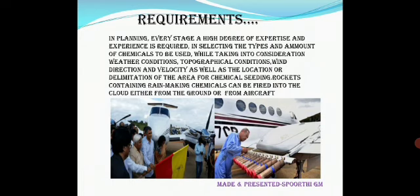In planning, every stage requires expertise and experience. In selecting the types and amounts of chemicals, the compounds used in cloud seeding take into consideration weather conditions, topographical conditions, wind direction and velocity, as well as the location or delimitation of the area for chemical seeding. Rockets containing rain-making chemicals can be burst into the cloud either from the ground or from aircraft.